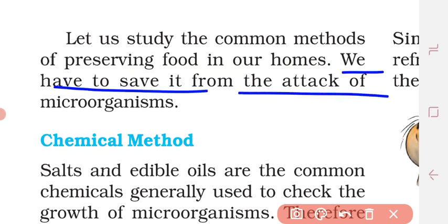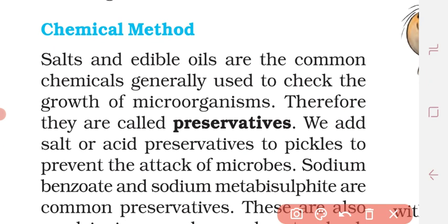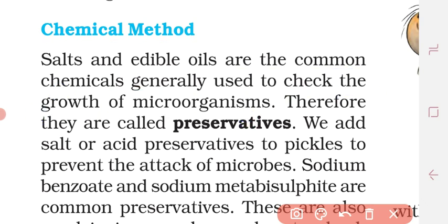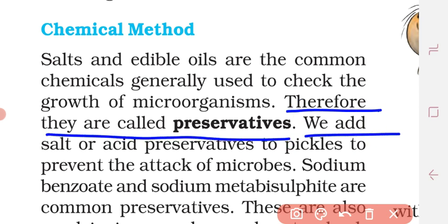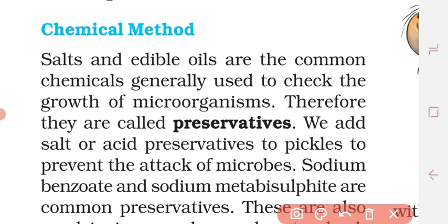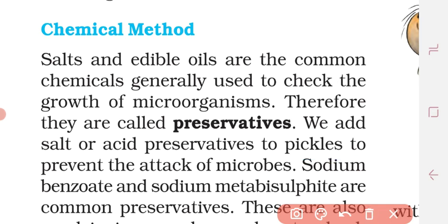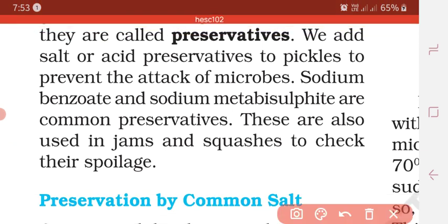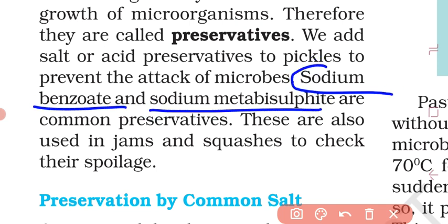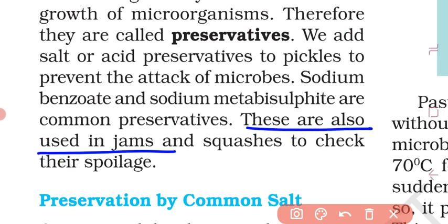We need common methods to preserve food at home and save it from the attack of microorganisms. The chemical method uses salt and edible oil — common chemicals that can control the growth of microorganisms. These are called preservatives. We add salt and acid preservatives to pickle to prevent the attack of microbes. Sodium benzoate and sodium metabisulfite are common preservatives, also used in jams and squashes to check their spoilage.